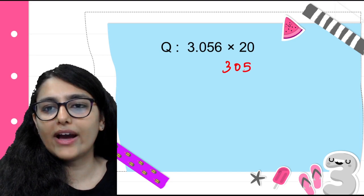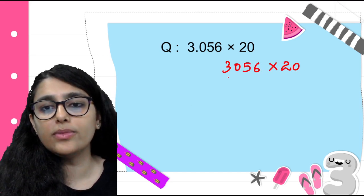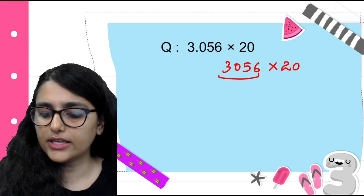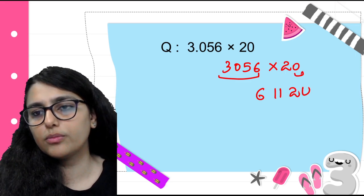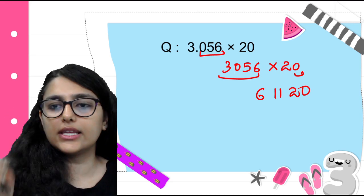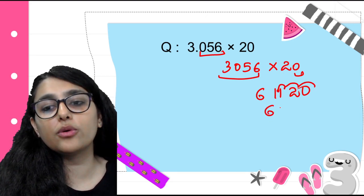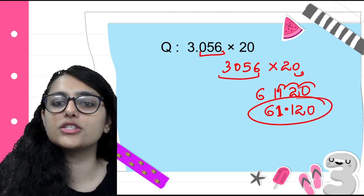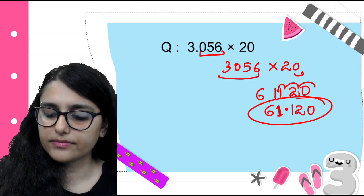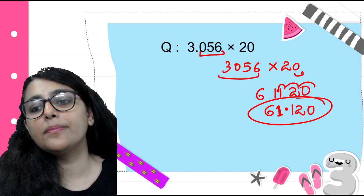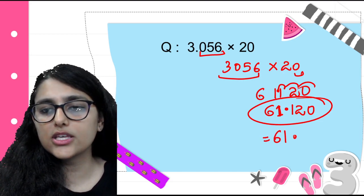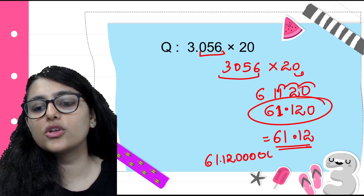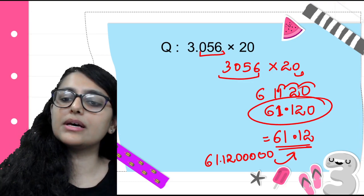Next: 3.056 × 20. Forget the decimal — multiply 3056 × 2, then add the zero from 20 at the end. 3056 × 2 = 6112, plus the zero from 20 gives 61120. Now count decimal places: 3 places after the decimal. Put the decimal 3 places from the right: 61.120. The trailing zero after the decimal has no value, so 61.12 is also correct — any number of trailing zeros after the decimal doesn't change the value.